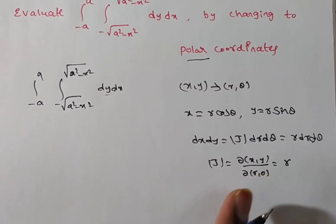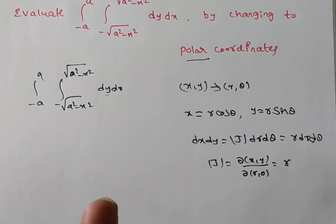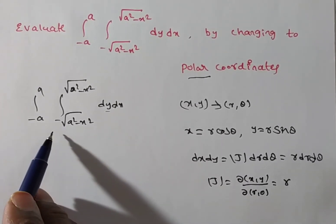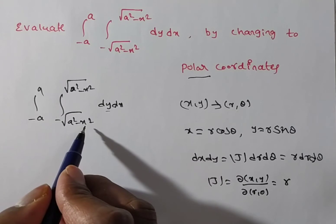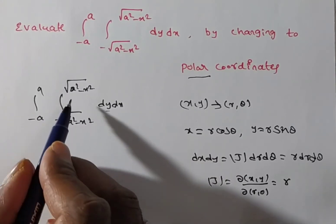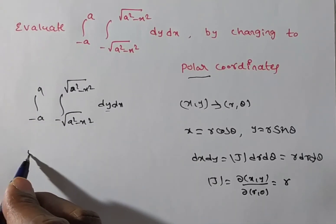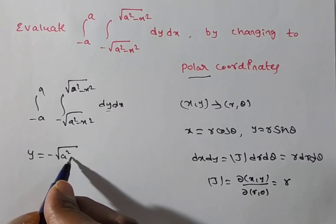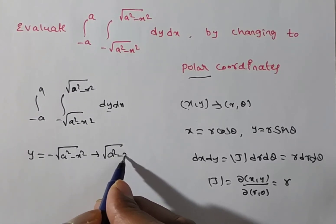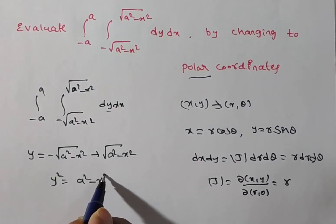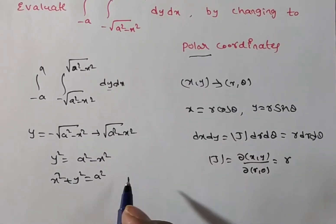Now, what about the region? We require the limits in x, y which are given, and we need to convert them into r, theta limits. Observing the limits, we see the inner limit is minus square root of (a squared minus x squared), which is a function of x — that is the limit for y. So y squared equals a squared minus x squared, giving x squared plus y squared equals a squared.